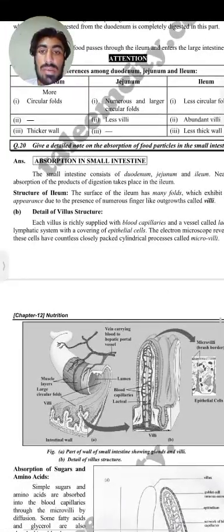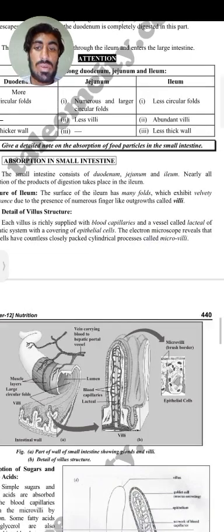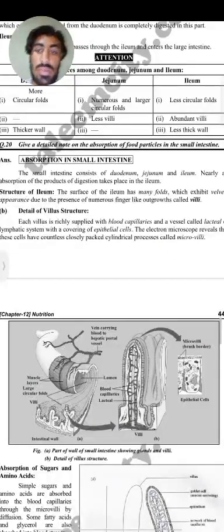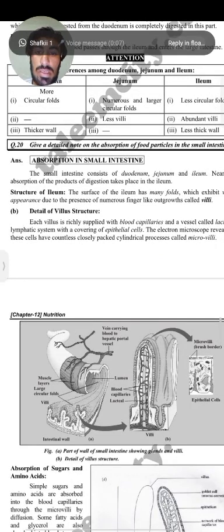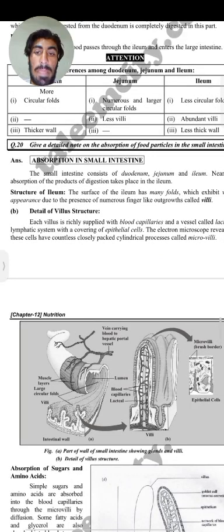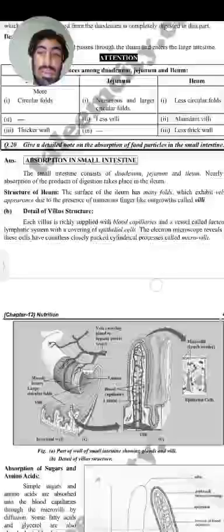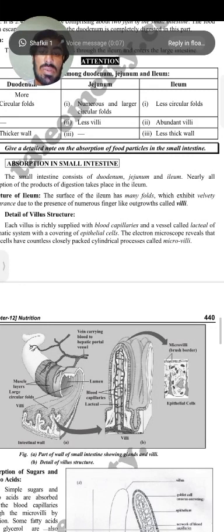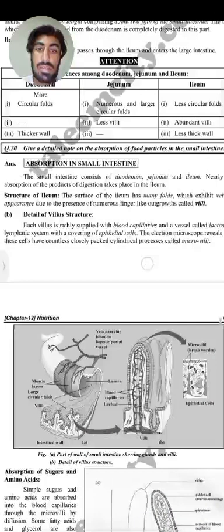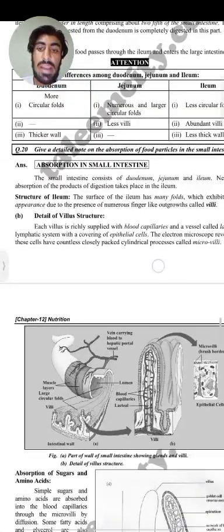Nearly all absorption of the products of digestion takes place in the ileum. The surface of the ileum has many foldings, and the membranes of these foldings exhibit a velvety appearance.